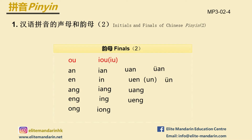Now let's move to the finals part. Finals two: 欧 (ou), 油 (iu), 安 (an), 眼 (yan), 腕 (wan), 圆 (yuan), 恩 (en), 因 (yin), 温 (wen), 云 (yun), 昂 (ang), 阳 (yang), 汪 (wang), 风 (eng), 兴 (ying), 暴 (weng), 余 (iong).